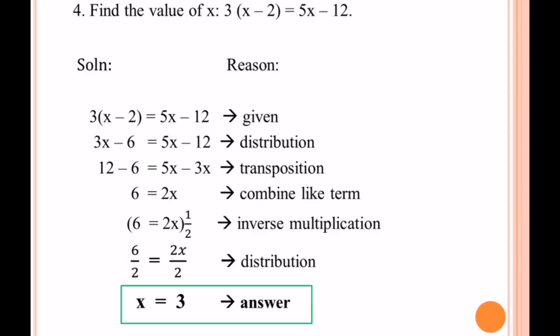On the left side, we have 3. On the right side, 5 times 3 is 15 minus 12, which is also 3. So we can say the value of x, which is 3, satisfies the given problem.